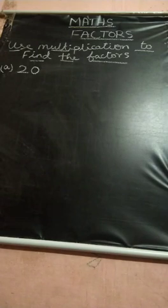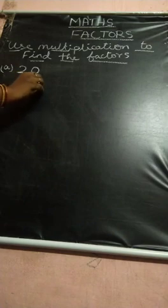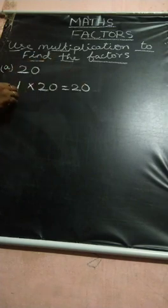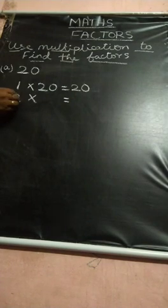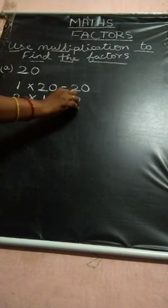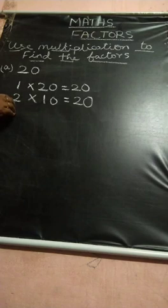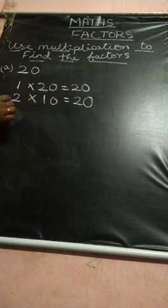Use multiplication to find the factors. For 20, you start from 1. 1, 20s are 20. 2 tables — when will 20 come? 2, 10s are 20. 3 tables — will 20 come? No, 20 will not come in the 3 table. So move on to the next number.